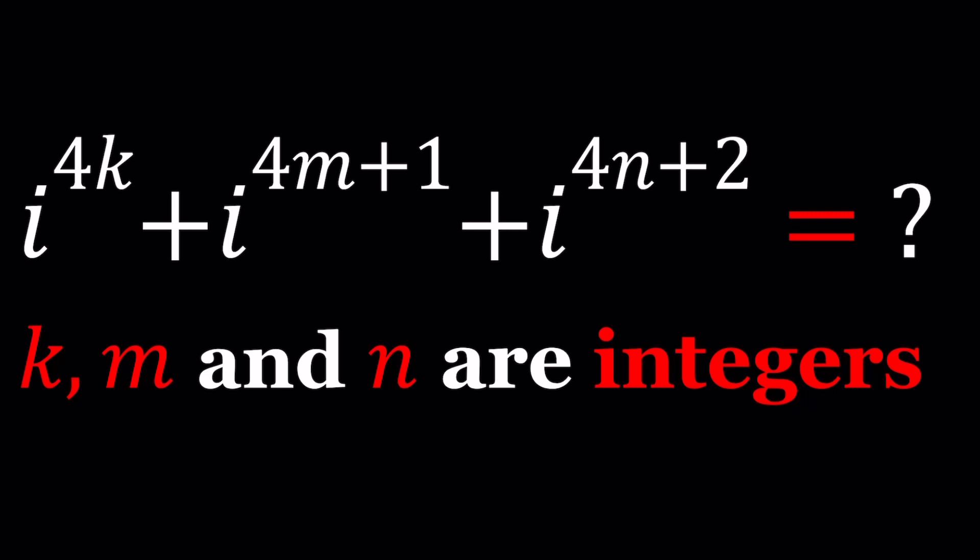Now, when you get a problem with many variables, you could replace these variables with some values, such as what happens if k equals 1, m equals 0, and n equals 2. Let's go ahead and take a look.